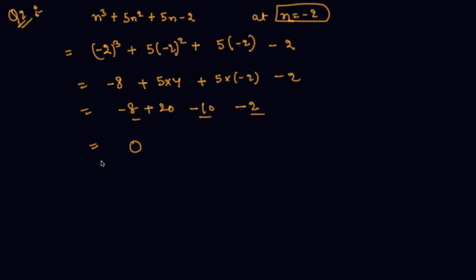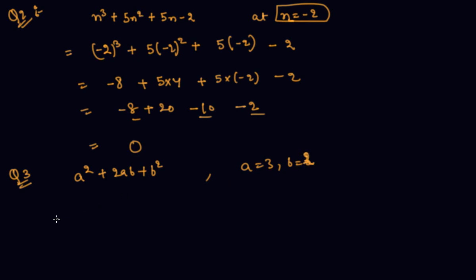Now let me give you one more typical example. The question is: find the value of a squared plus 2ab plus b squared, where a equal to 3 and b equal to 2. What I will do here is put the value of a and b in place of the respective variables.